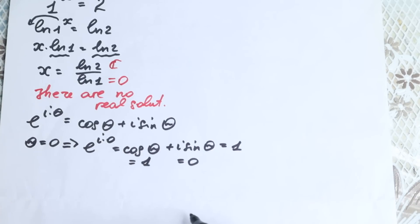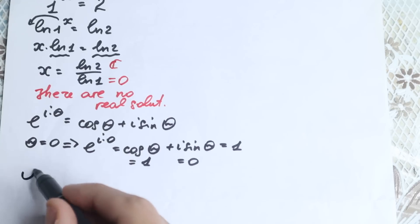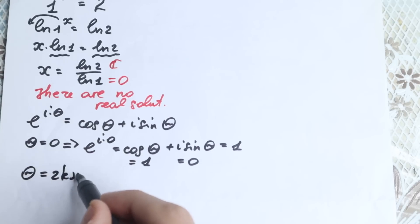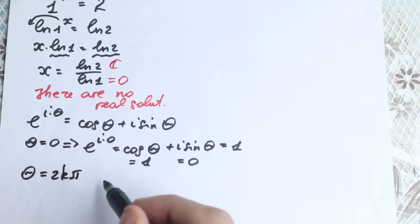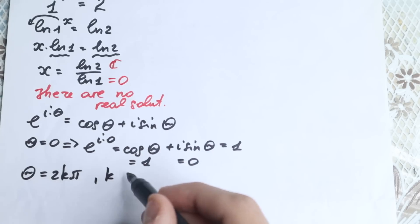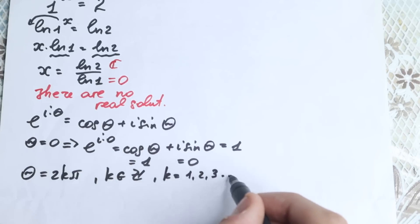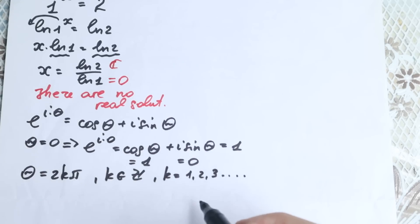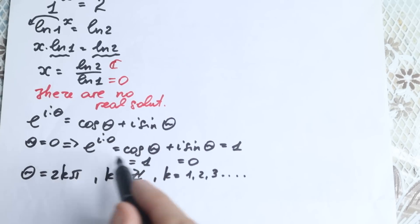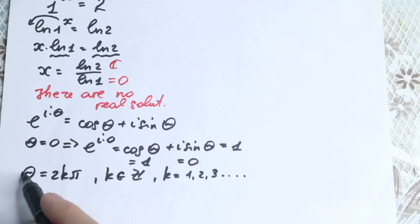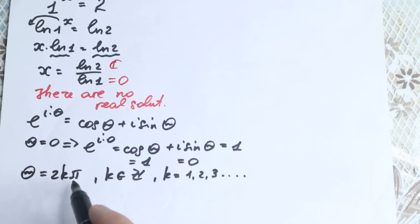Let's write this expression in another way and get a period. If theta equals 2k pi — where k is an integer — let's write this substitution. If theta equals 2k pi, I change theta by 2k pi, giving us e to the power i times 2k pi equals cosine 2k pi plus i sine 2k pi.